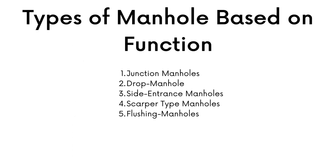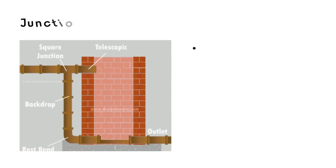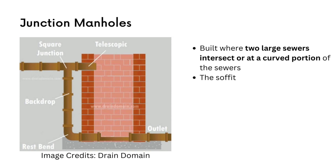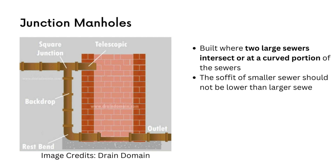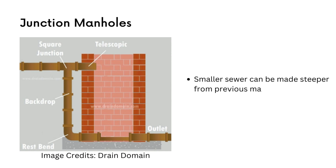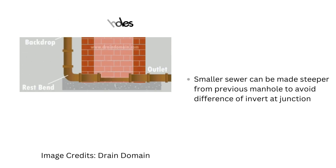Now let's talk about different types of manholes based on function. Junction manholes are constructed at the intersection of two large sewers or at the curved portion of the sewer where the curved portion is situated within the manhole. At the junction, it is recommended that the soffit of the smaller sewer not be lower than the larger sewer. The smaller sewer can be made steeper from the previous manhole to avoid a difference in invert at the point of junction.